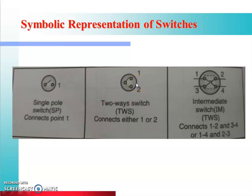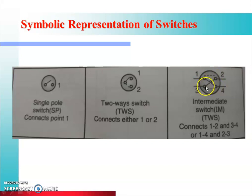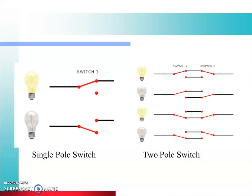Two-way switch mein do contacts given hain — aap isko one ke saath connect kar sakte ho ya phir two ke saath. Aur intermediate switch mein 4 contacts hain, jisko aap kisi bhi do contacts ke saath connect kar sakte ho — jaise one ya two ko connect kar sakte ho, three ya four ko, one ya four ko, ya phir two ya three ko. Aise alag-alag combination bhi connection isme hote hain.